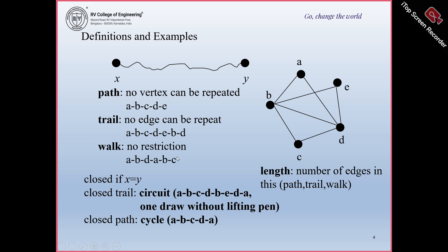Next is walk. A walk is nothing but there is no restriction on edge or vertex repetition — anything can be repeated, either vertex or edge. Your path and trails are walks, but every walk need not be a path or a trail. For example: A to B, B to D, D to A, A to B, B to C — this is a walk where you have repetition of both vertices and edges.